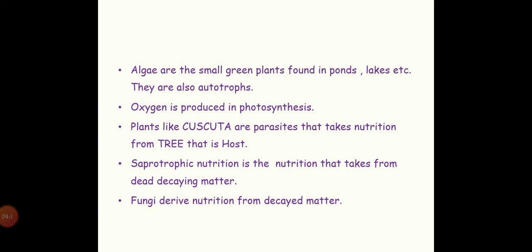Oxygen is produced in photosynthesis. Plants like Cuscuta are parasites that take nutrition from a tree, which is the host. For example, if you want to eat something, you need to ask your mom because your mom knows how to cook it — your mom is the host, and you are getting food from her, so you are the parasite. Likewise, Cuscuta is a parasite which takes nutrition from the tree, so the tree is called the host.